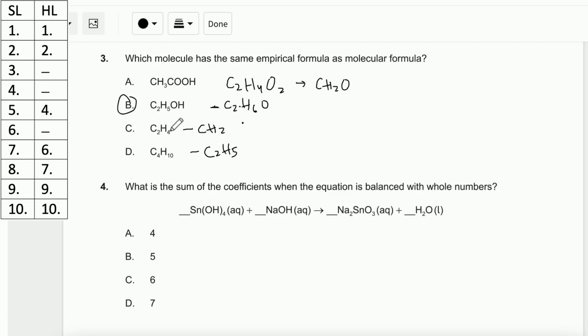Number 4. What is the sum of the coefficients when the equation is balanced with whole numbers? Check for Na - here is 2 and here is 1, so we put 2 here. For H, here is 4 and here becomes 2, so it's 6 and here is only 2, so we put 3 right here. Don't forget, the coefficient here is also 1 and here is also 1. The total is 7.